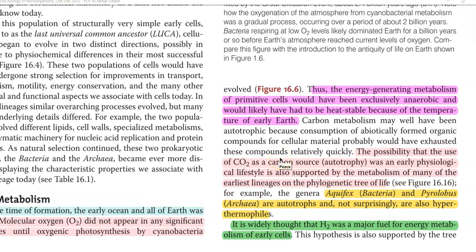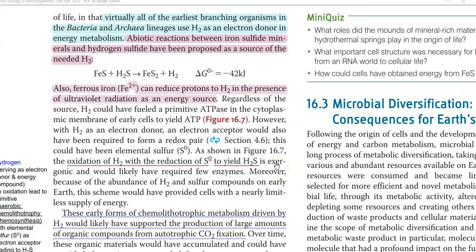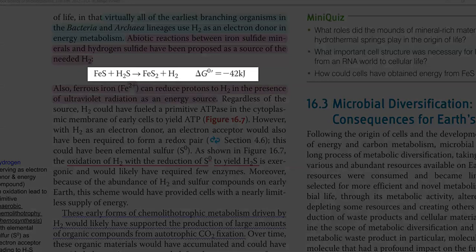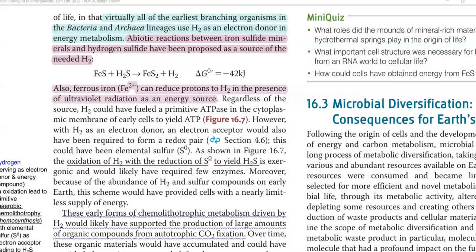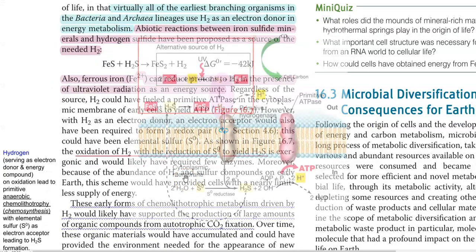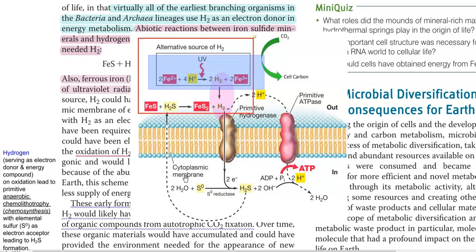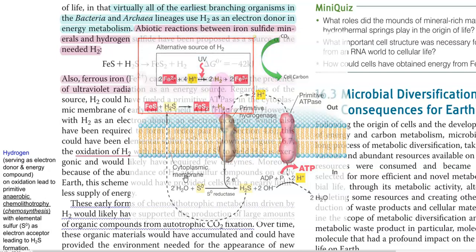It was widely thought that this evolutionarily old group of organisms employing the chemolithotrophic lifestyle may have been using hydrogen as a major fuel of energy for their metabolism. Virtually all the earliest evolved organisms under the category of bacteria and archaea were able to use hydrogen as an electron donor in their metabolism. Even the abiotic reaction between iron sulfide minerals and hydrogen sulfide has been proposed as a mechanism by which hydrogen can evolve in the system. Apart from that, ferrous ions (Fe²⁺) can also reduce protons into hydrogen in the presence of ultraviolet radiation as an energy source.